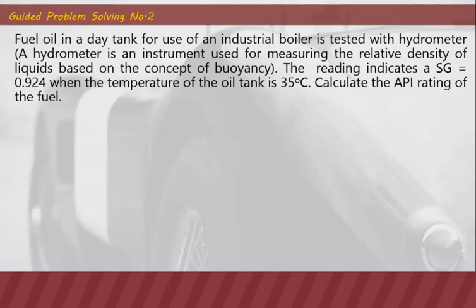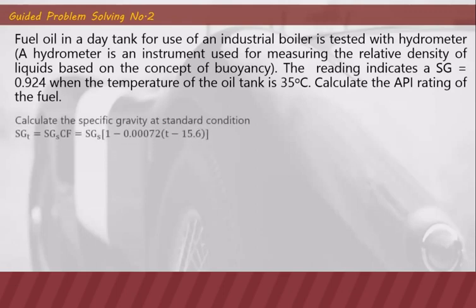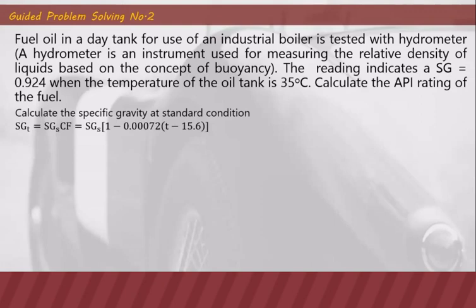Guided problem solving number two: fuel oil in a day tank for an industrial boiler is tested with a hydrometer — an instrument used for measuring the relative density of liquids based on buoyancy. The reading indicates a specific gravity of 0.924 when the oil temperature is 35°C. We need to calculate the API rating. Since the SG of 0.924 is measured at a particular temperature, it is SGP (not SGS), so we must first find SGS using the correction factor, then compute the API rating.